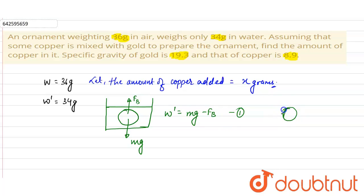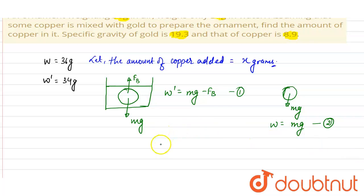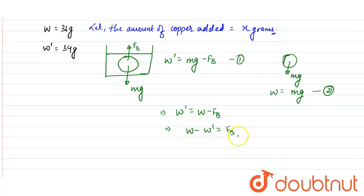In air, the ornament experiences only a downward force mg, so the weight W in air equals mg — this is equation number two. From equations one and two, W-dash = W minus Fb, or W minus W-dash = Fb. So W minus W-dash represents the loss in weight, which equals the buoyancy force.